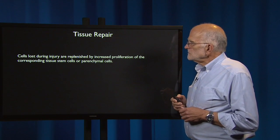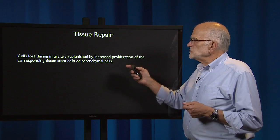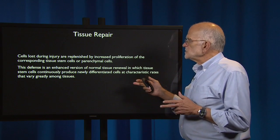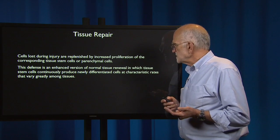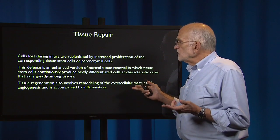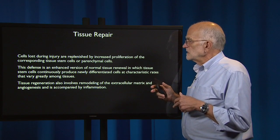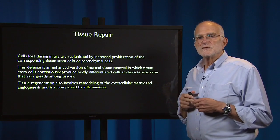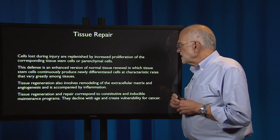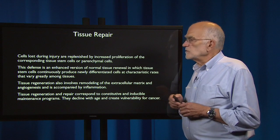Tissue repair is there to replace cells that are lost during injury, and it does so with increased proliferation of tissue stem cells or parenchymal cells. This is an enhanced version of normal tissue renewal in which tissue stem cells are continuously producing newly differentiated cells at a rate that is characteristic and varies greatly among tissues. Tissue regeneration also involves remodeling the extracellular matrix and angiogenesis, and it is accompanied by inflammation — not inflammation as a reaction to disease, but inflammation as part of the mechanism of tissue repair. Tissue regeneration and repair correspond to constitutive and inducible maintenance programs. They decline with age and they create vulnerability for cancer.